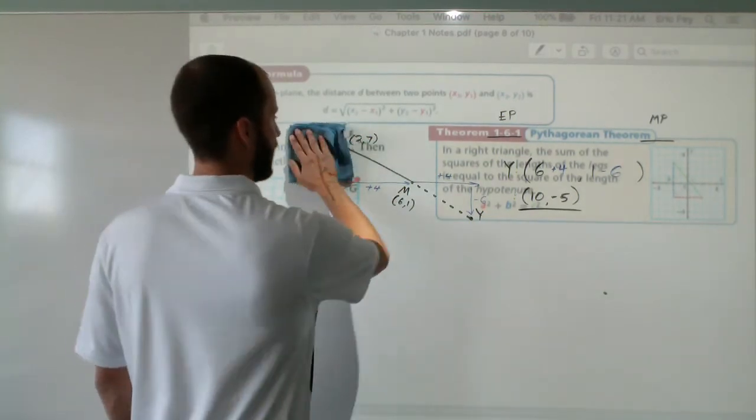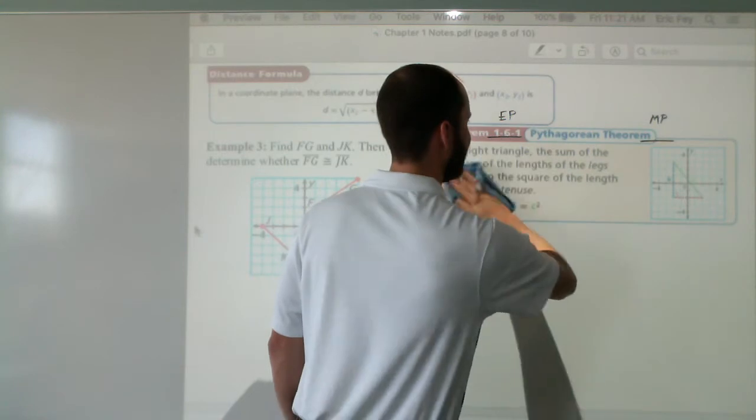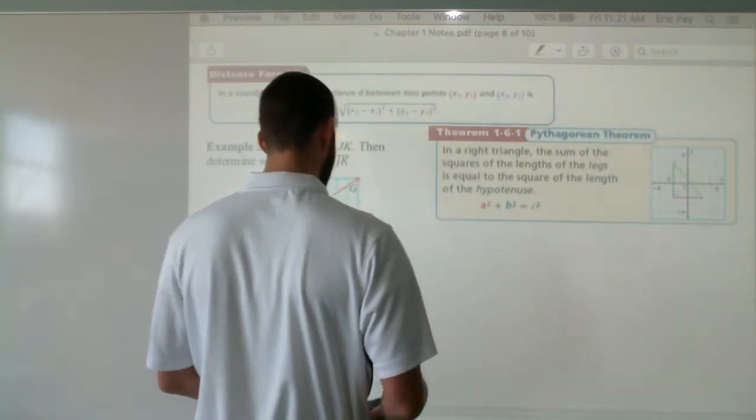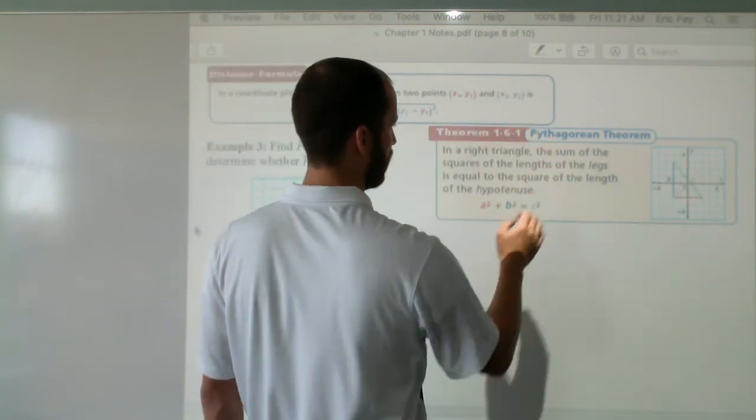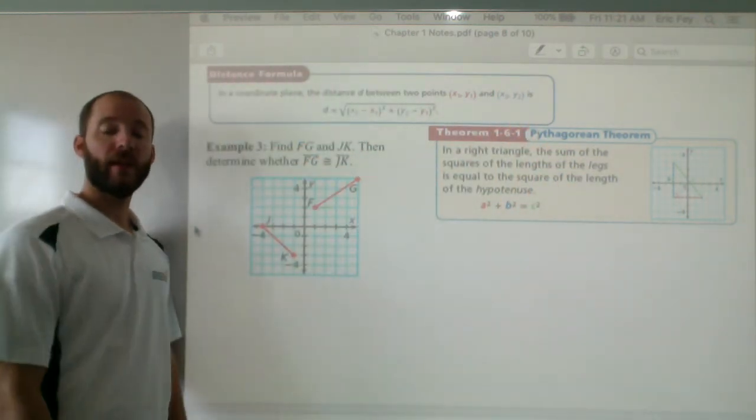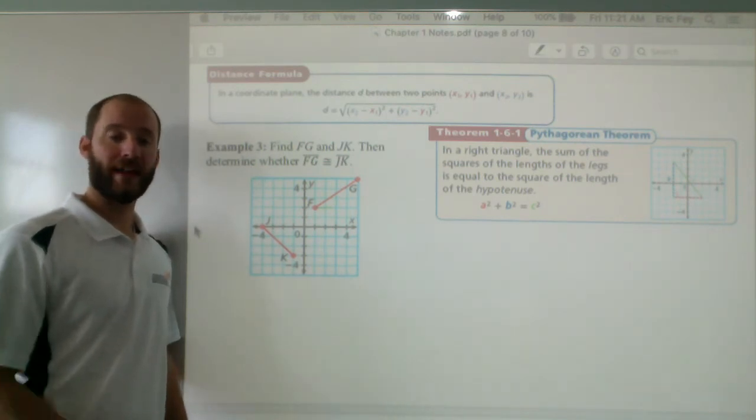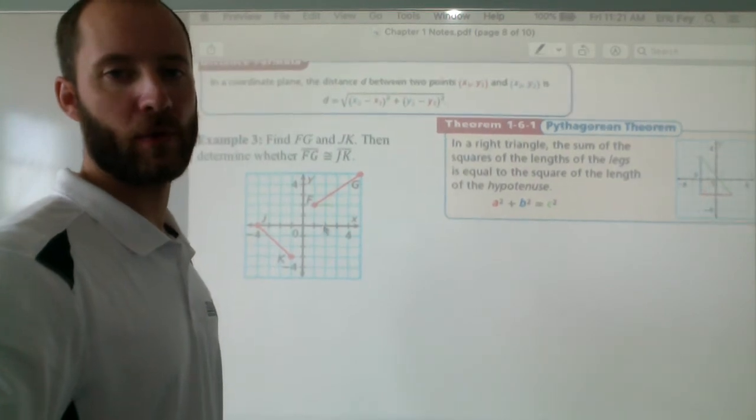So now distance. Again, those line segments, they are finite. They have a distance, a length, that you can measure. We have two ways of doing that. The distance formula or the Pythagorean theorem. The distance formula requires that you use coordinates. The Pythagorean theorem requires that you use a triangle. So what we want to do is we want to set up both of them for you.